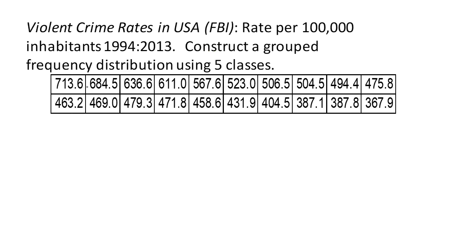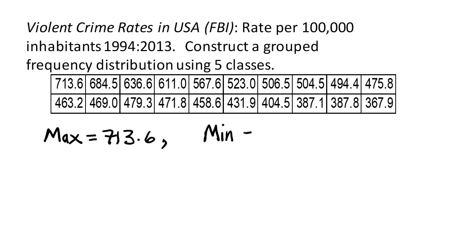Our first task is to find the class width. We'll need to find the max value of the data — the largest value — which is 713.6. Then we're going to find the smallest value, or the min value of the data. That turns out to be 367.9, because violent crime has been going down for these 20 years.